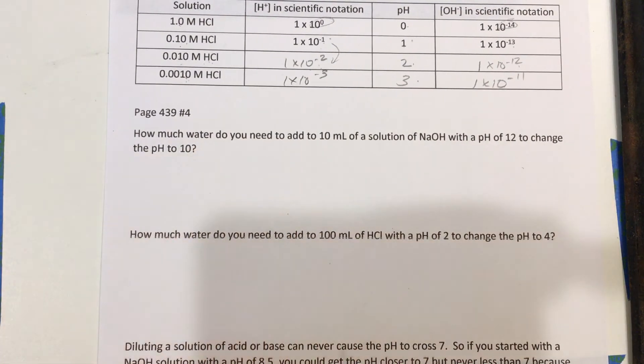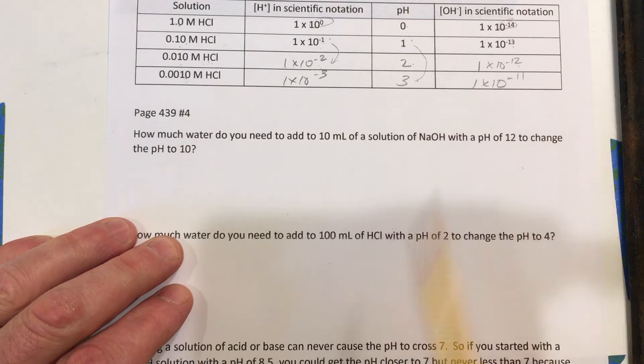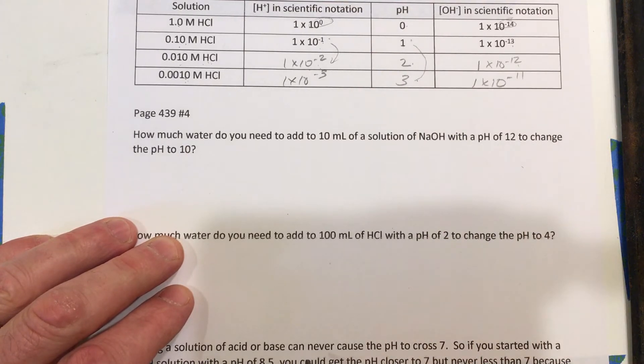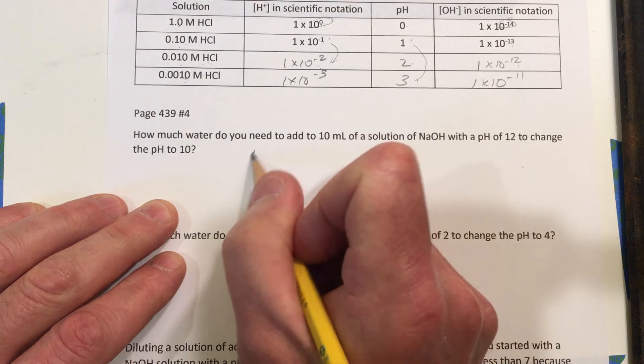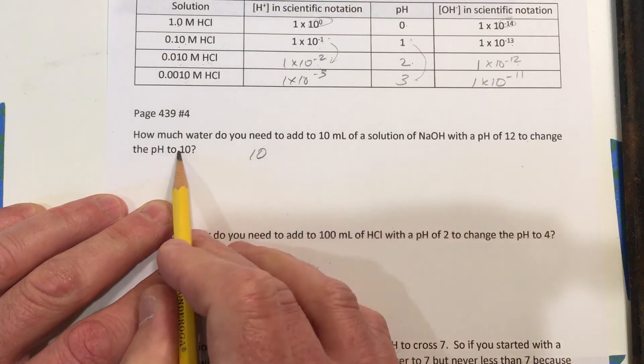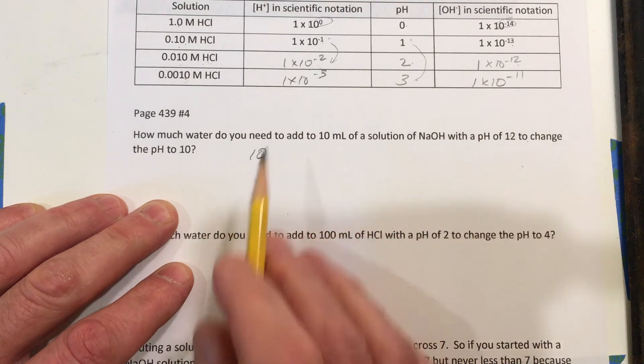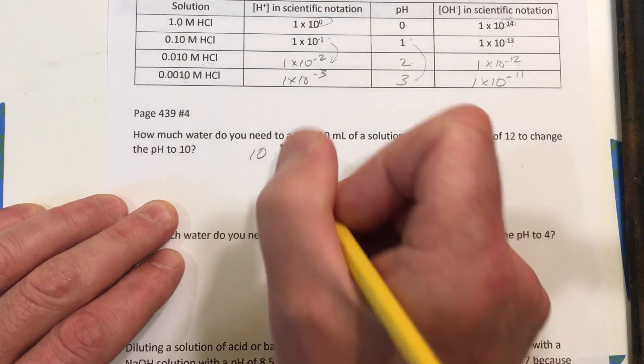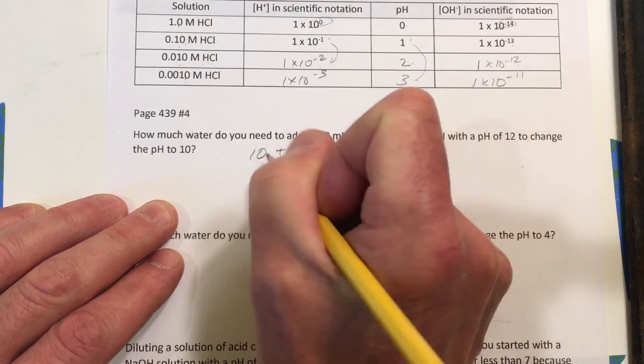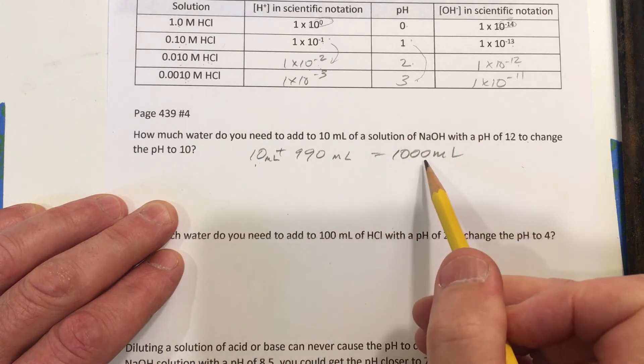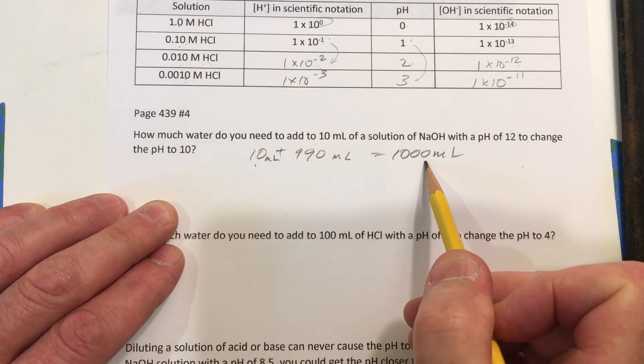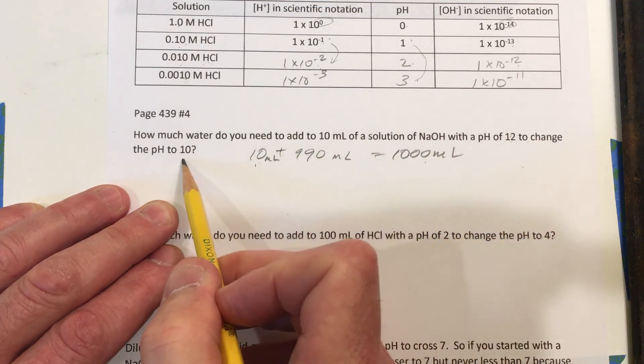So this is problem number 4 or problem like number 4. How much water do you need to add to 10 milliliters of solution of NaOH with a pH of 12 to change the pH of 10? We want the pH to change by 2 spots. So we have to have 100 times the solution or 1 one-hundredth of the concentration. So I'm going to add to 10 milliliters. I want it to be a change of 2 pH. So I want there to be 1,000 milliliters total. So I'm going to add 990 milliliters to that 10 milliliters to get 1,000 milliliters. So this has been increased by 100-fold. So the pH will move towards 7 from 12 to 10 because we've diluted it.